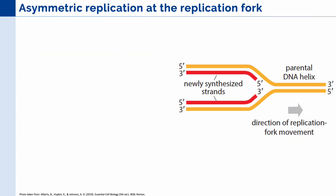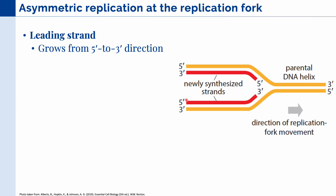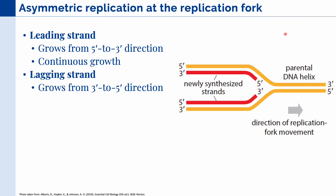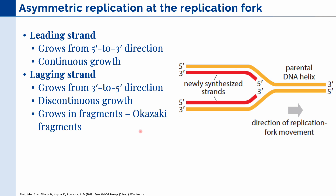The fixed direction of DNA replication poses a problem at the replication fork, because while one strand is read in the 3' to 5' direction, the other template strand is read in the 5' to 3' direction. This leads to the creation of two different new strands — what we call asymmetric replication. The first strand, created on the 3' to 5' template strand, is known as the leading strand, and it grows in the normal 5' to 3' direction — continuous growth. On the opposite side, we have the lagging strand, which grows in the 3' to 5' direction. Because DNA can only be created in the 5' to 3' direction, this strand undergoes discontinuous growth, meaning it grows in fragments called Okazaki fragments.